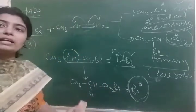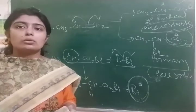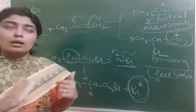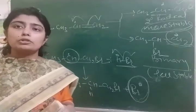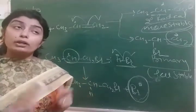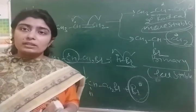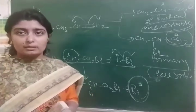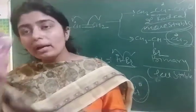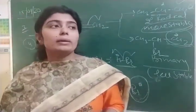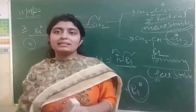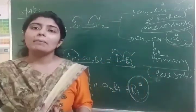1-bromopropane is the major product of anti-Markovnikov's rule. This effect is also called the peroxide effect, because peroxide is used in it. This concept was given by Kharasch, so it is also called the Kharasch effect. This concept is completely opposite to Markovnikov's, so it is called anti-Markovnikov's rule. In Markovnikov's rule, heterolytic cleavage takes place. In anti-Markovnikov's concept, homolytic cleavage takes place. So students, today we have learned the mechanism of Markovnikov's rule and anti-Markovnikov's rule.